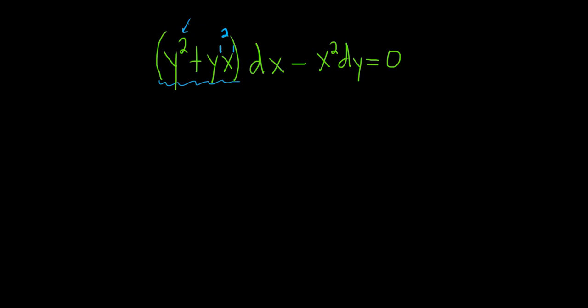And again, you can add the exponents even when the bases are different. Likewise here, this is also 2, so this is a homogeneous function of degree 2. So if both of the functions in front of dx and dy are homogeneous of the same degree, we say the differential equation is homogeneous. So again, you can just look at the exponents, and as long as they all match, you are okay.